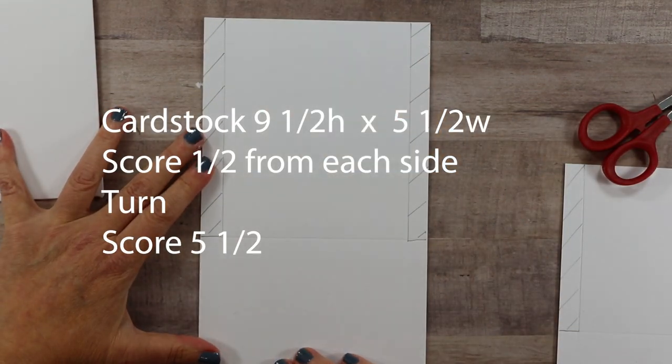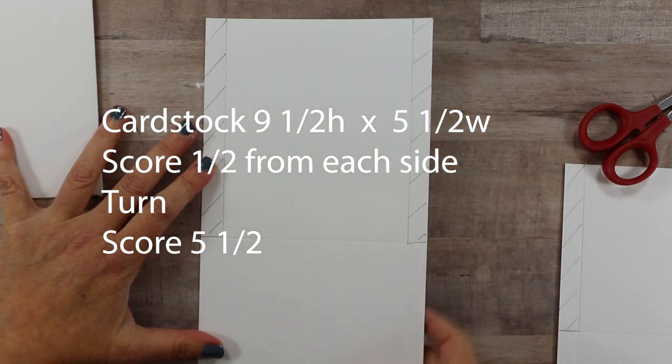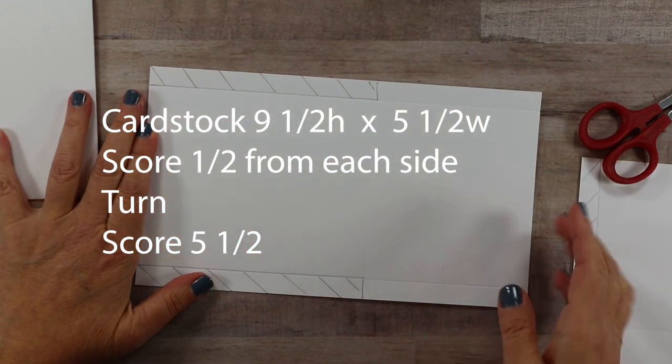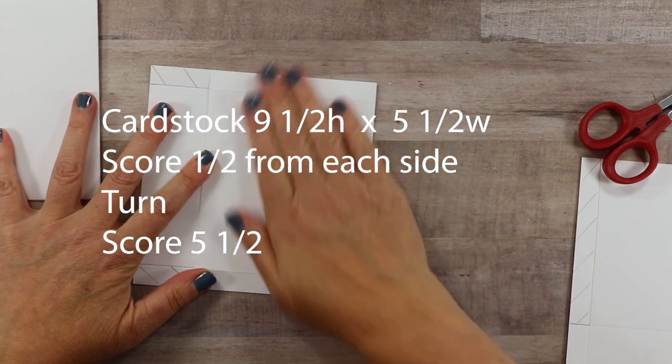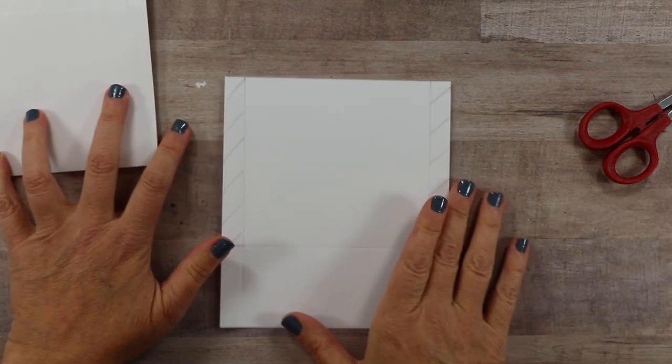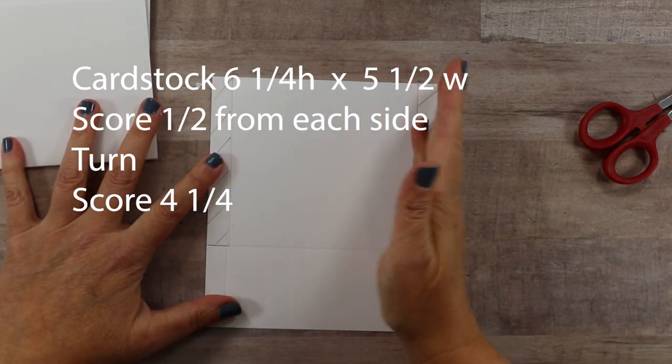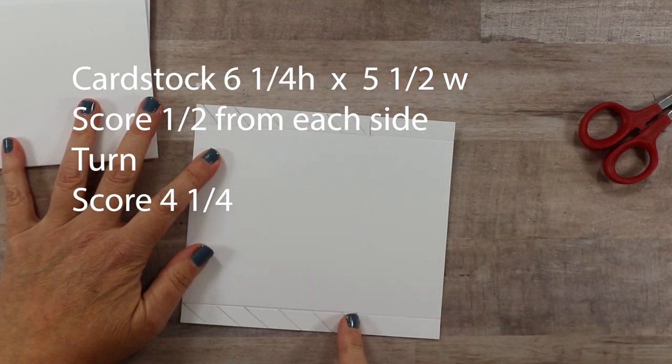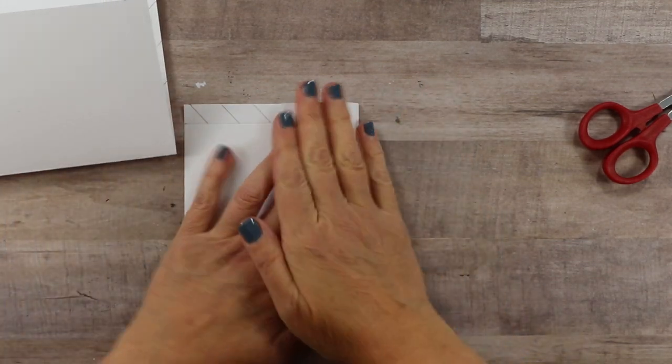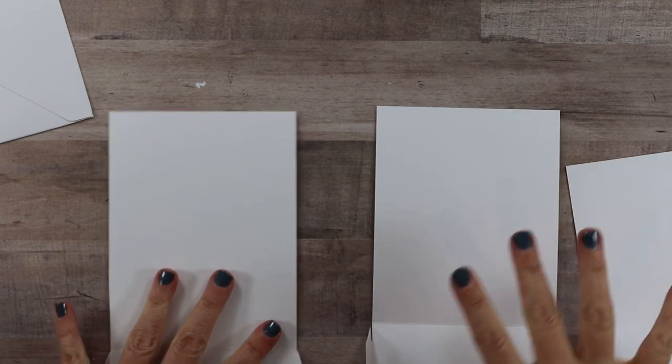For the next size down, it is nine and a half inches high by five and a half inches wide, scored at half an inch on the side. This time it is five and a half inches deep, and so you'll just go ahead and line those up. The last one is six and a quarter by five and a half, same score lines on the side. This time it is going to be four and a quarter.